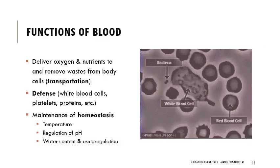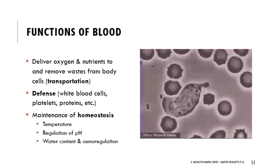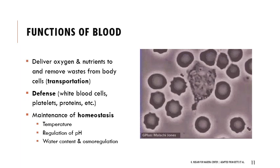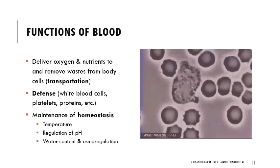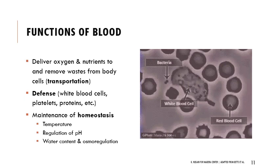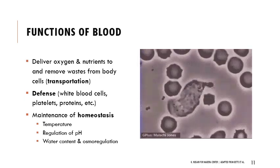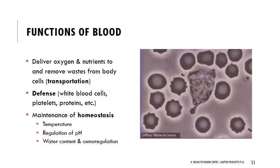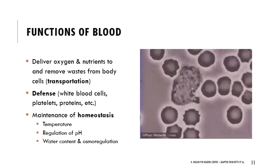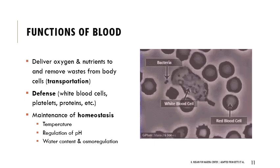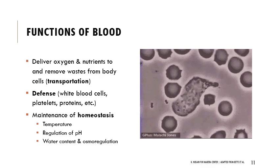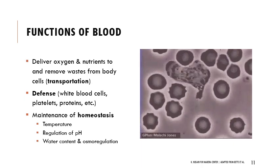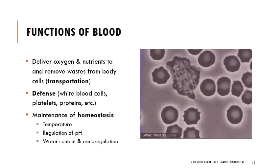When thinking about the functions of blood, we usually think about delivering oxygen to body tissues and removing carbon dioxide — respiratory gases — but blood has far more functions. It delivers nutrients, absorbing material from the digestive system and transporting it through the body via the hepatic portal system. It's important for defense through white blood cells, phagocytosis, platelets, and proteins. It also maintains homeostasis: blood flow regulates temperature, the bicarbonate buffer system regulates pH, and blood regulates water content and osmoregulation.